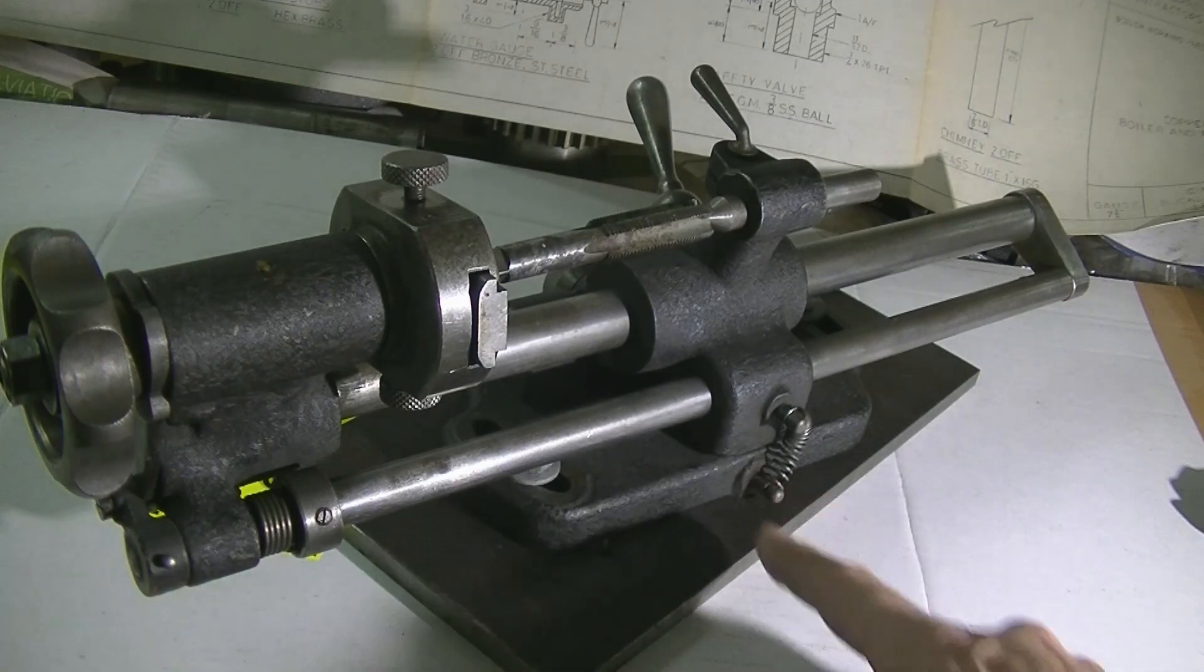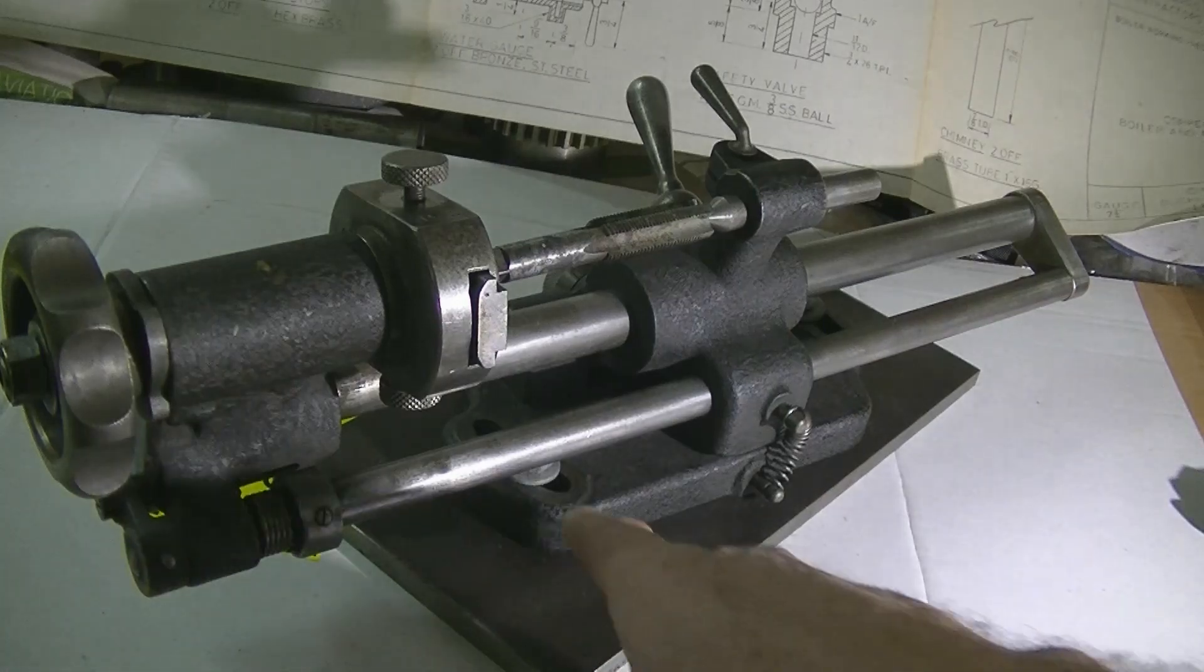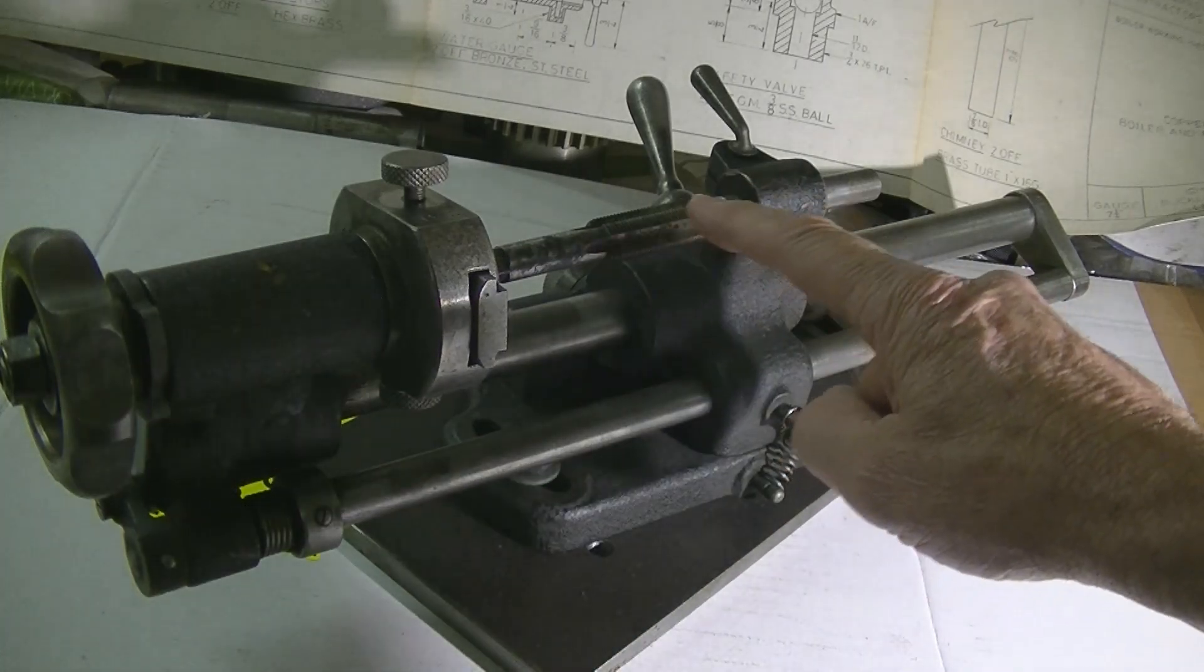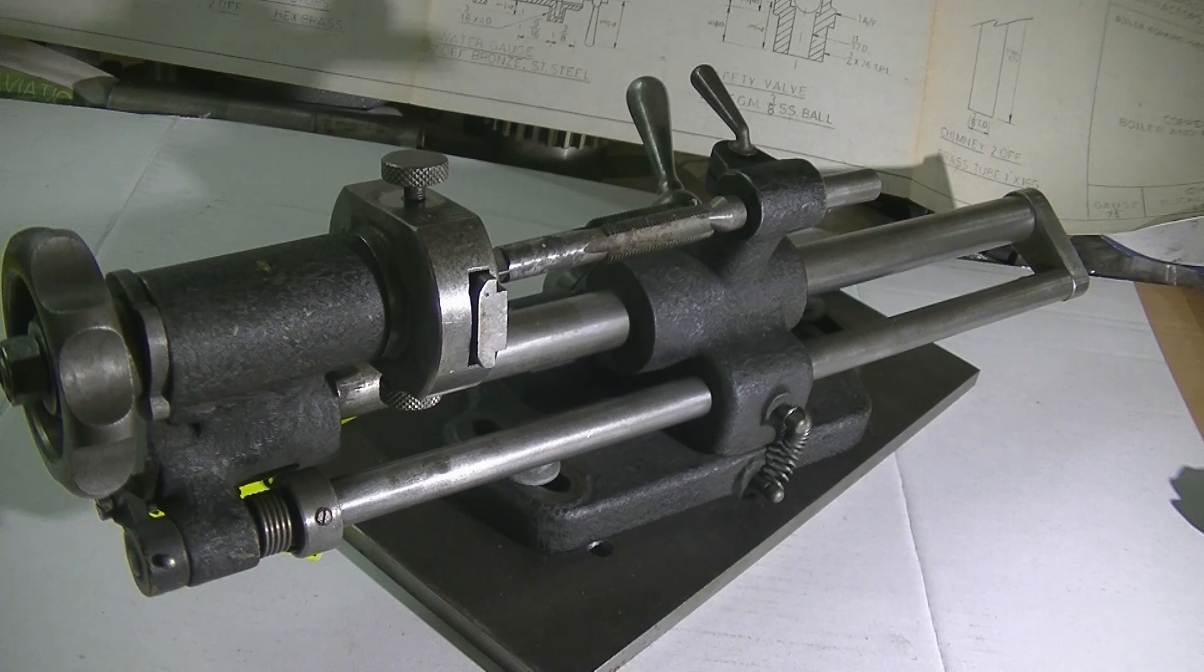Now the body of the attachment has two clamping bolts and it swivels on the base plate. That's how you set up the lead angle on the tap to be ground. Just repeating what was done in the original manufacturing process. So it's fairly easy to go.